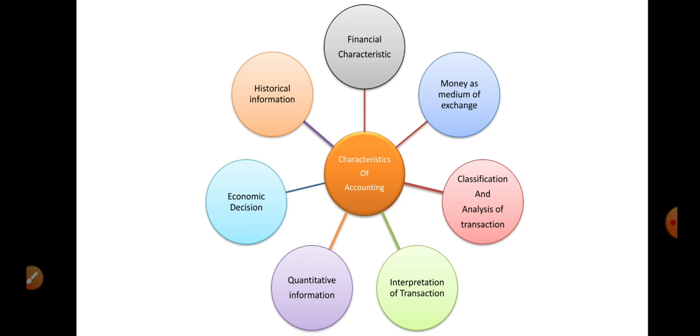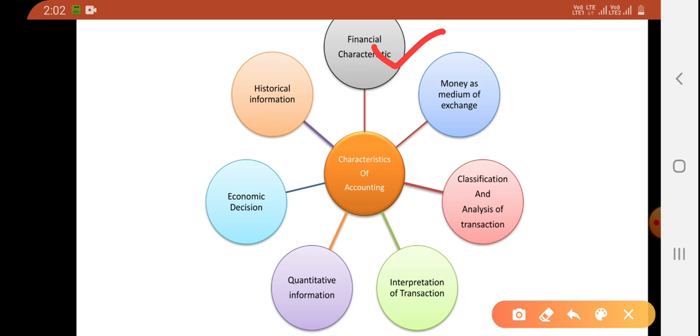Let's start the characteristics of accounting. This one is your first characteristic: financial characteristic. Financial word tells you that all transactions or events which are recorded in accounting must be measurable in monetary value. Whatever transactions or dealings you do, their measurement should be in money form. Suppose you have purchased five cases of sugar for rupees five hundred, then five hundred is the financial value.